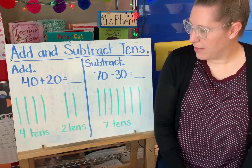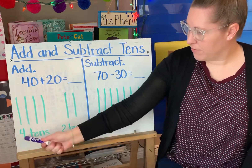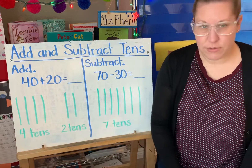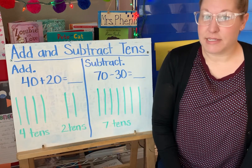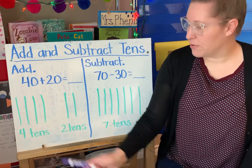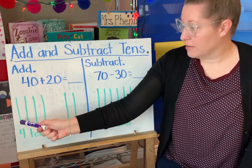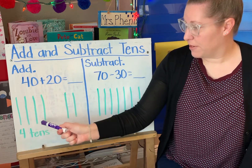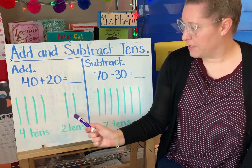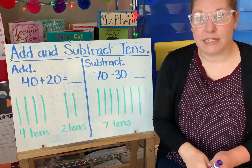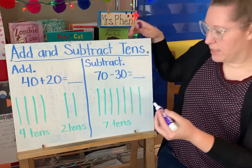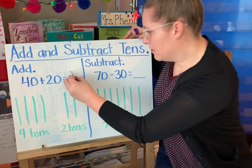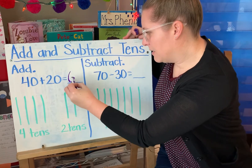And if I add them up, I know that four plus two equals six. I also know that six 10s equals 10, 20, 30, 40, 50, 60. So 40 plus 20 equals 60.